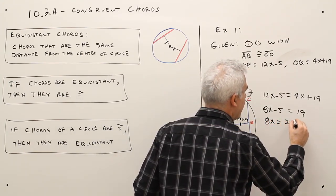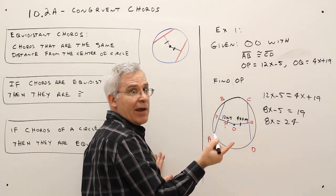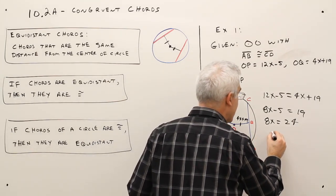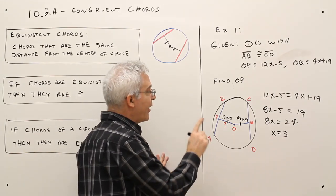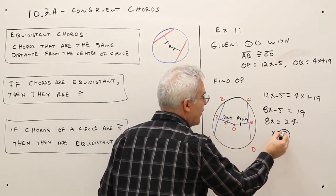8X equals 24. Divide each side by 8, and we get X equals 3. We don't care about X, we want OP, so I'll take that 3,